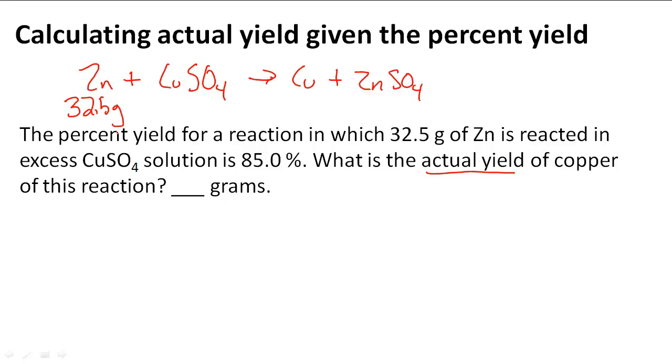What we have to do is 32.5 divided by the molar mass of zinc, which is 65.4 grams per mole, and that gives me 0.4969 moles of zinc.